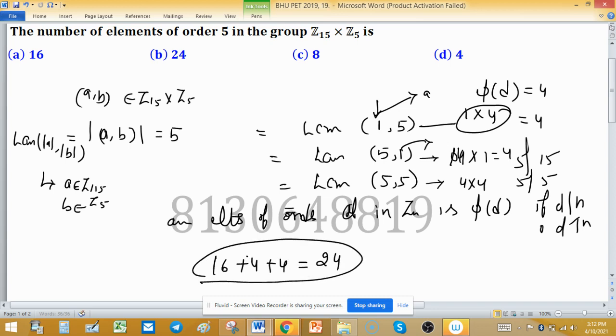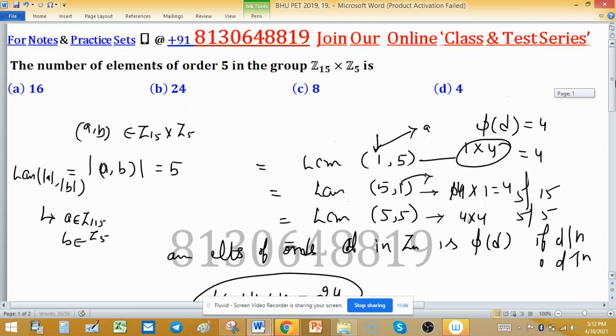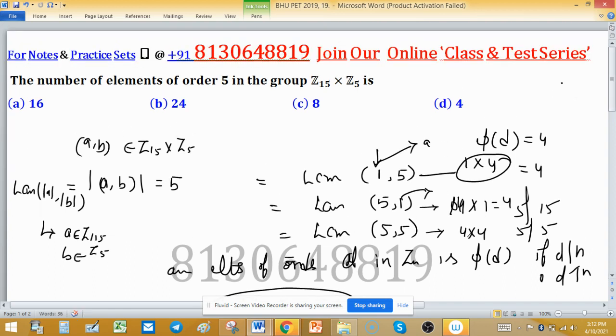This is how to find elements of order 5 in Z₁₅ × Z₅. Because the order from direct product is LCM of individual orders, we check how many elements in Z₁₅ or Z₅ have order 1, 5, and 5. Using this fact we find the solution - option B is correct.